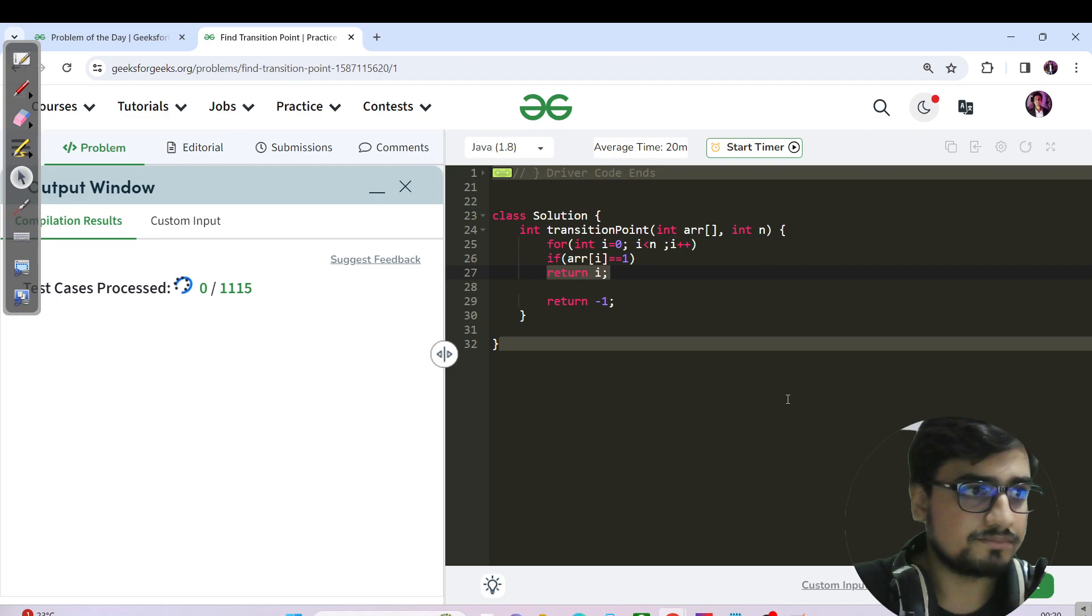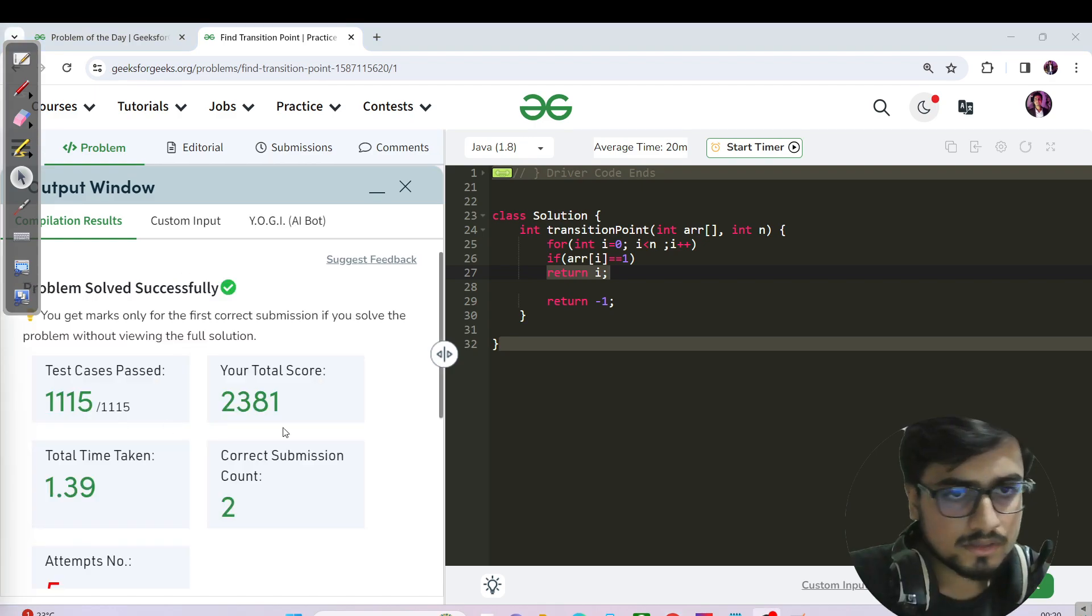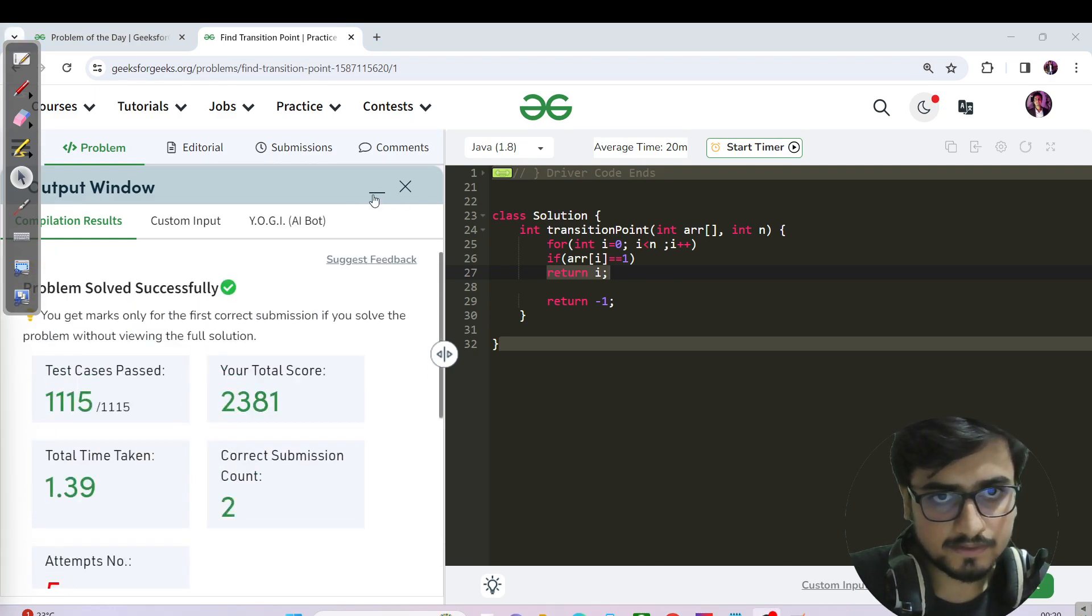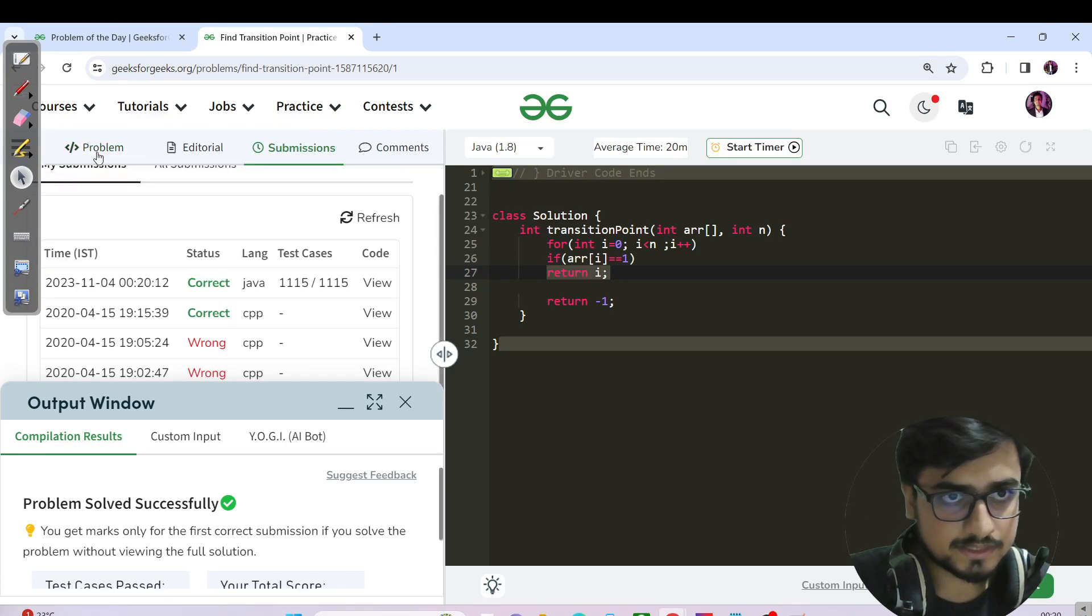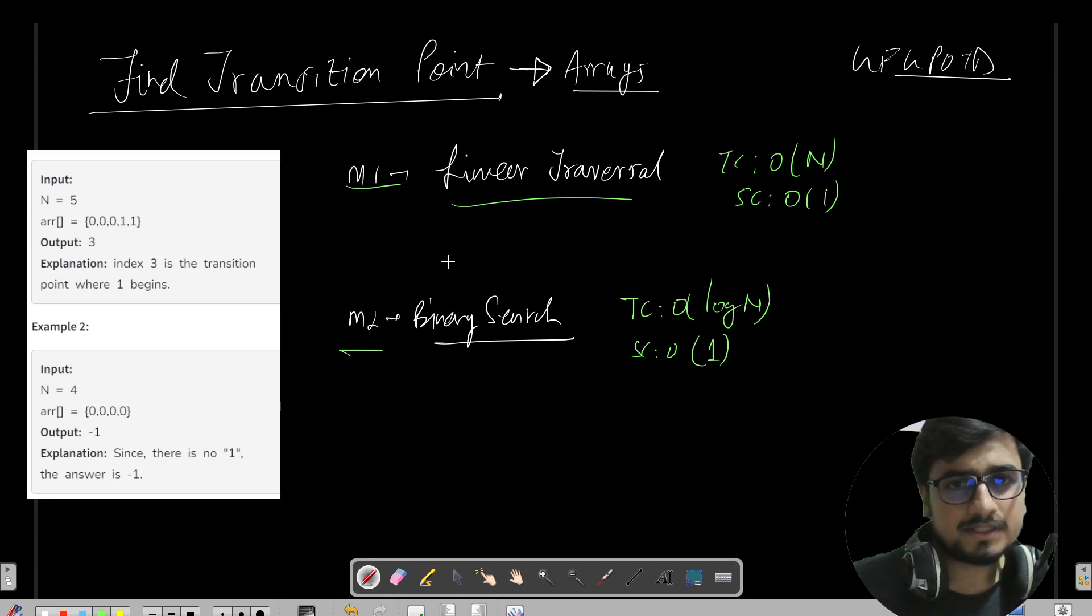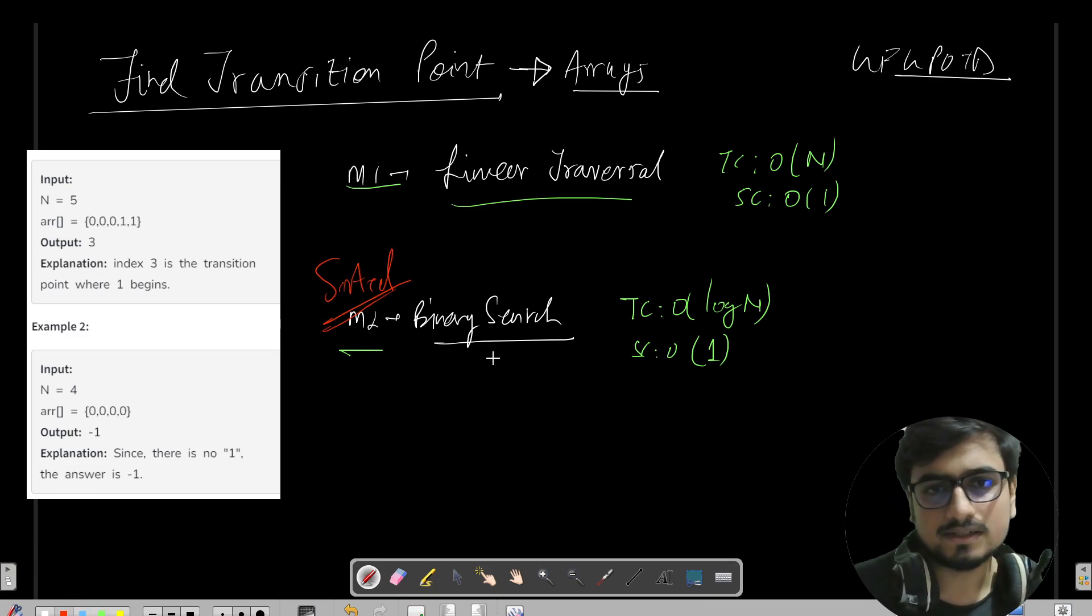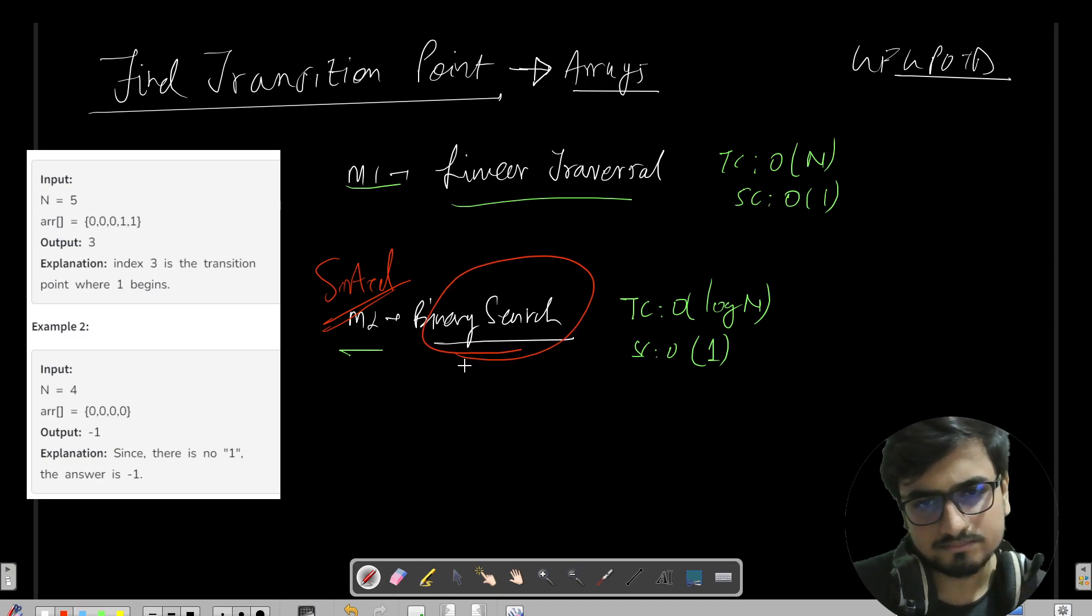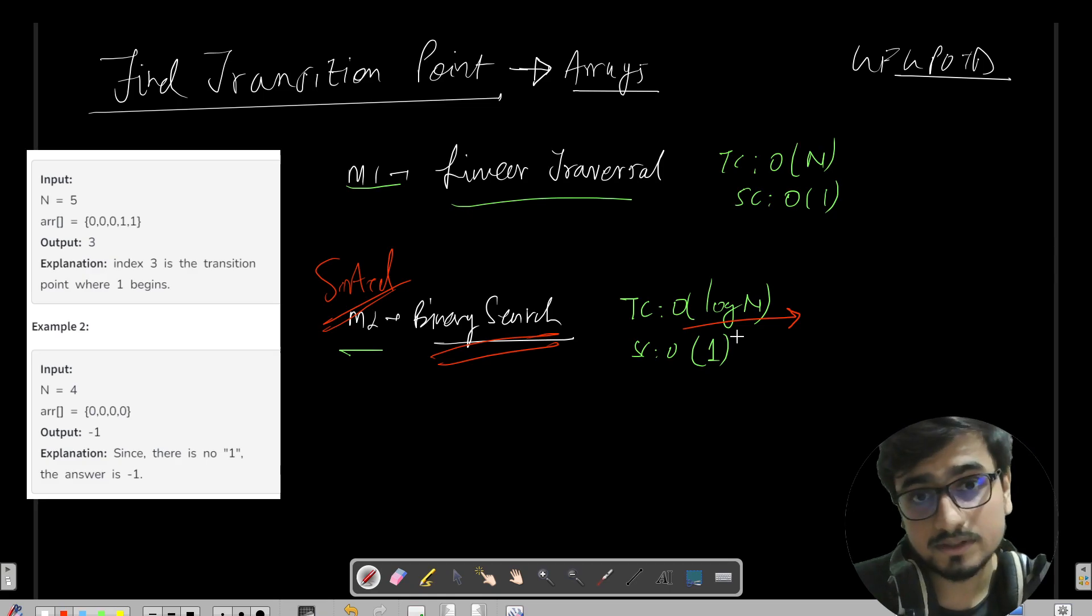But this question - we have been given a sorted array, correct? We have been given a sorted array. Sorted array ho aur hume index find karna ho, then binary search humare dimag mein aana chahiye. Binary search toh lagana chahiye.